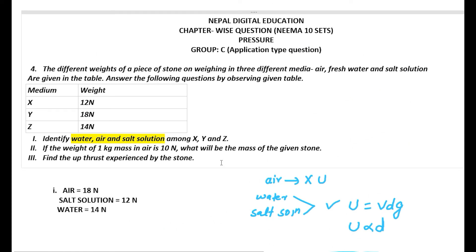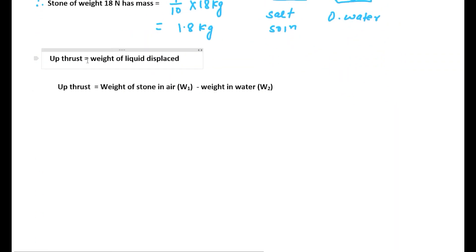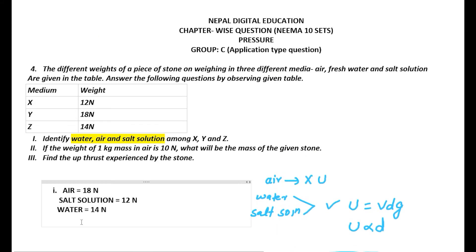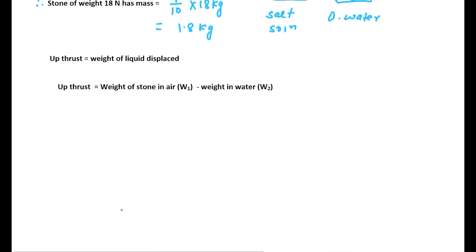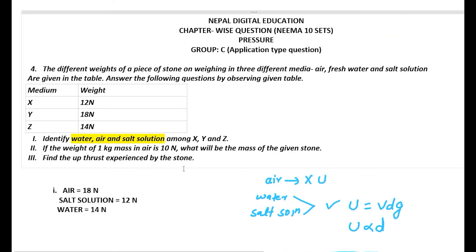Next, find the upthrust experienced by the stone. We know that upthrust equals the weight of liquid displaced, which is given by W1 minus W2 — that is, weight in air minus weight in water. Weight in air is 18 newton and weight in water is 14 newton. So upthrust = 18 − 14 = 4 newton. This is the required upthrust experienced by the stone.